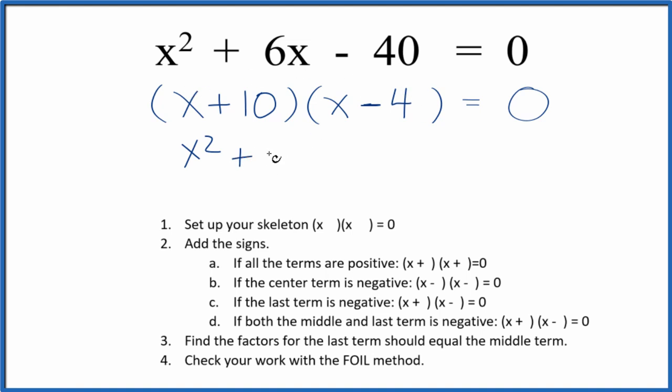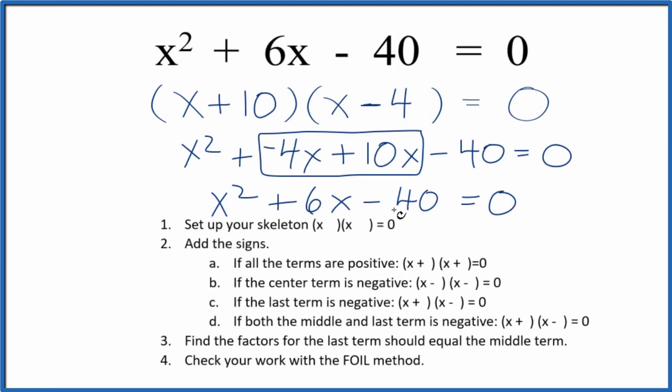Outside, x times negative 4, that's negative 4x. Inside, 10 times x, that's 10x. And the last term, 10 times negative 4 is negative 40. All that equals 0. Let's combine these two right here and we get... and this is the same thing we started with, so this has been done correctly.